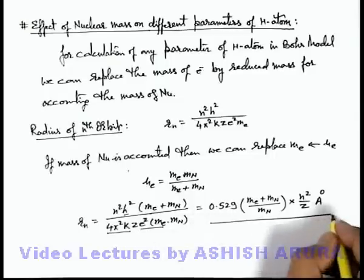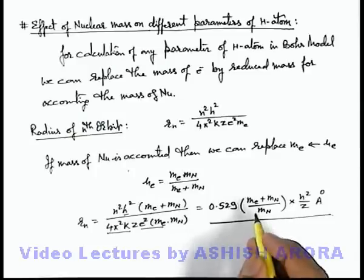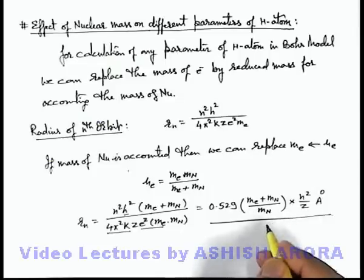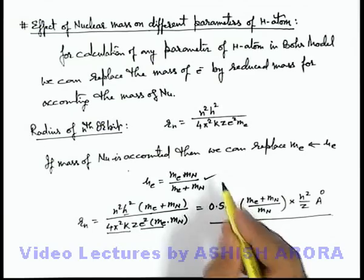So this will be the expression which we are going to use for radius of nth orbit in hydrogen atom if we account the mass of nucleus. And similar to this for various hydrogenic atoms we can find out all the basic parameters by using Bohr model by replacing the mass of electron by its reduced mass.